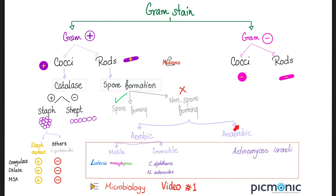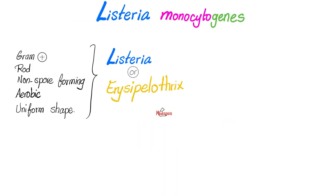Is Listeria aerobic or anaerobic? Aerobic. And as we'll see today, it could be facultative anaerobic as well, because we can classify bacteria into three categories: aerobic, strictly anaerobic, and facultative anaerobic. So Listeria could be aerobic or facultative anaerobic.